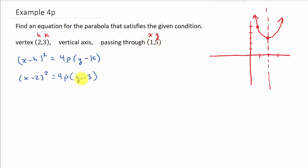So we'll plug 1 in for x and 5 in for y. That's going to give me 1 minus 2 squared equals 4p times 5 minus 3. So that's negative 1 squared is 1 equals 4p times 2. And so I get 8p equals 1, so p is equal to 1 eighth.